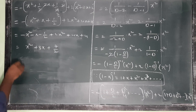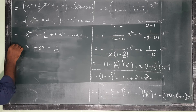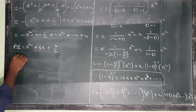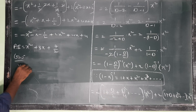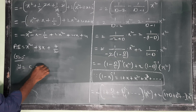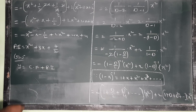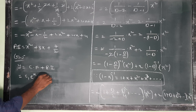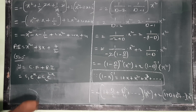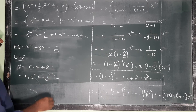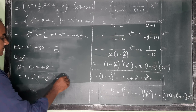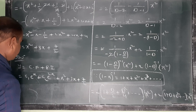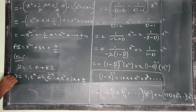So the particular integral PI = x² + 3x + 7/2. Therefore, the general solution is y = CF + PI = c₁eˣ + c₂e²ˣ + x² + 3x + 7/2.